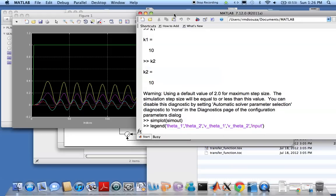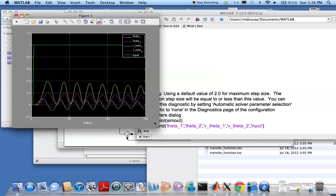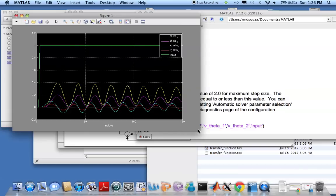And it should give us all the colors here. That's theta 1, looks like that is theta 2, this is the velocity of 1, this is the velocity of 2, and that's input which is step. And that's the end of our lesson.